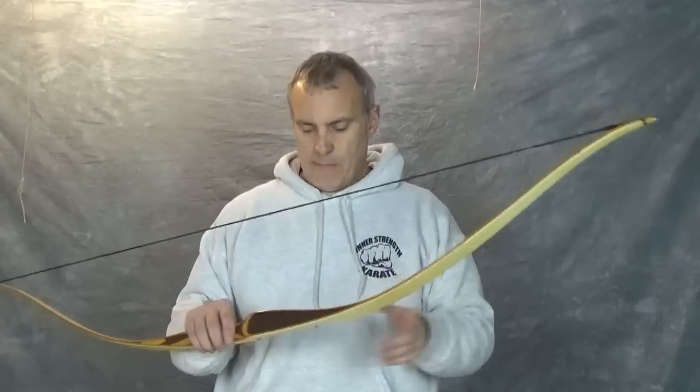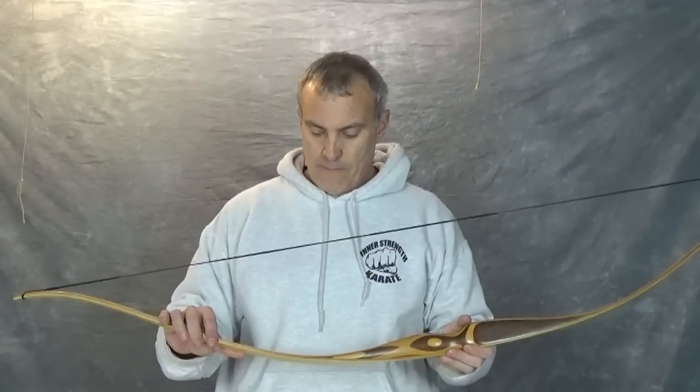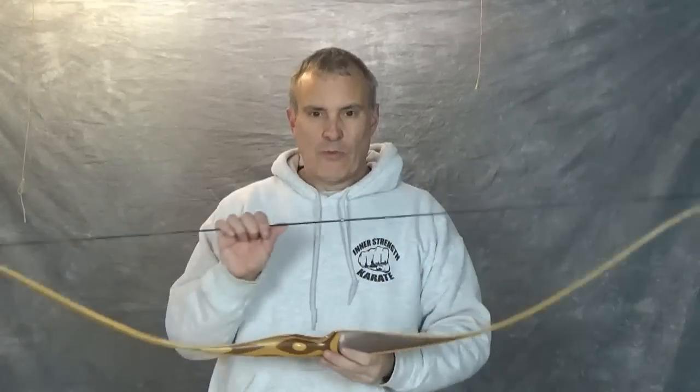All right, everybody. The Ben Pearson Colt Model 960. Not really a recurve and a little more than a long bow. It's really a long bow.